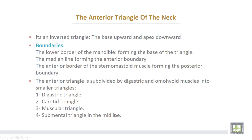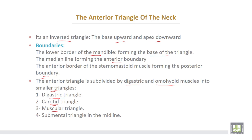The anterior triangle is an inverted triangle, with the base upward and the apex downward. Its boundaries are: the lower border of the mandible forming the base, the midline forming the anterior boundary, and the anterior border of the sternomastoid muscle forming the posterior boundary. The anterior triangle is again subdivided by the digastric and omohyoid muscles into smaller triangles: the digastric triangle, the carotid triangle, the muscular triangle, and in the midline the submental triangle.